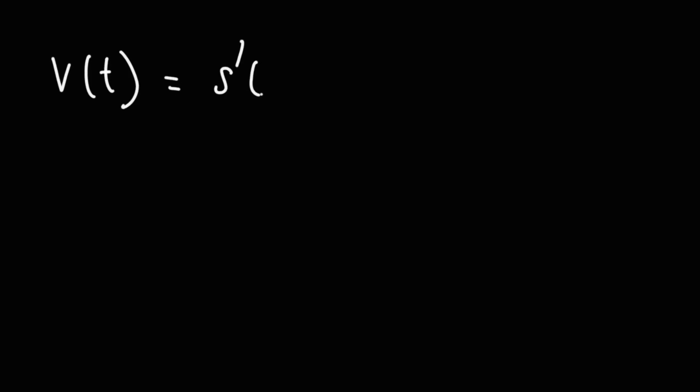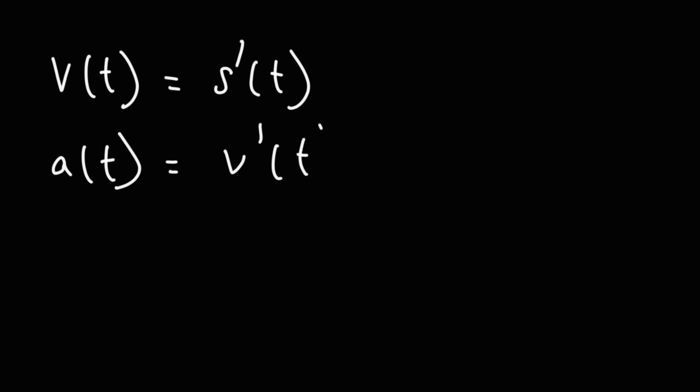If you wish to calculate instantaneous velocity, it's the derivative of the position function. And if you wish to calculate instantaneous acceleration, it's the derivative of the velocity function. Those are some additional formulas that you need to know.